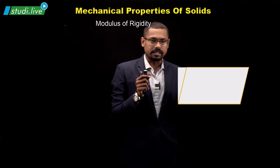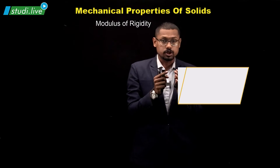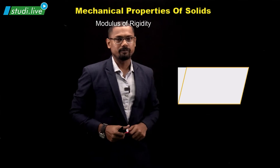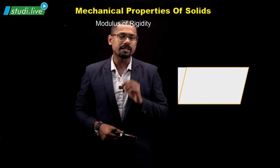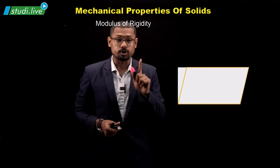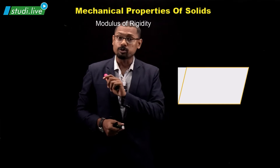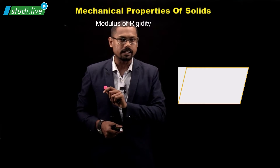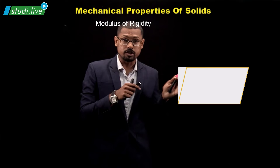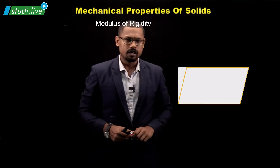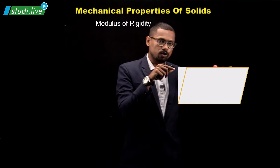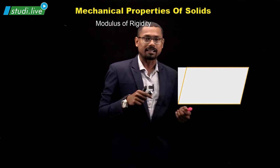In this diagram, initially this was just a square or rectangular face. All I did was apply some tangential force on it, and the very moment I applied that tangential force, the shape changed. What's important is that the shape changes — we do not focus on length, area, or volume, only on the shape change. Initially this was a rectangular shape; due to tangential force, it has now converted itself into a parallelogram.